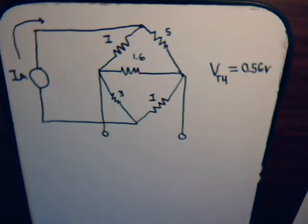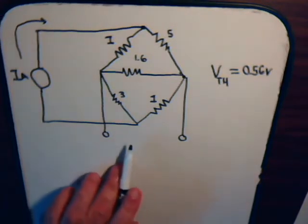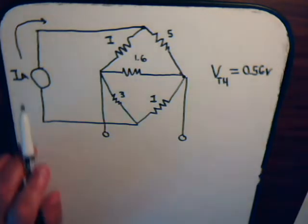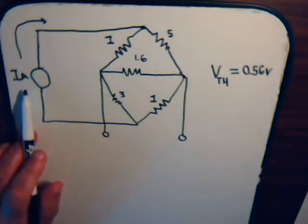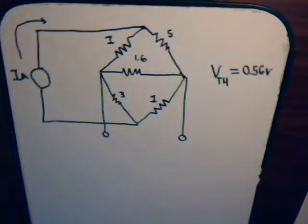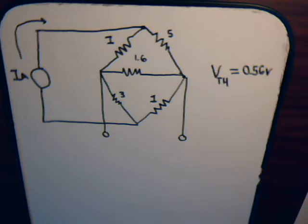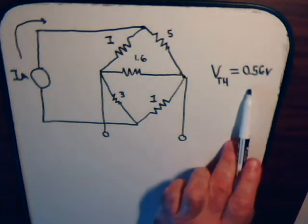This is video number 52, part 2, where we were considering a circuit that has a single current source. We wanted to determine both its Thevenin equivalent circuit and its Norton equivalent circuit. In the previous video, we decided that the simplest way to proceed would be to first determine its Thevenin equivalent circuit, and we determined the Thevenin voltage to be 0.56 volts.